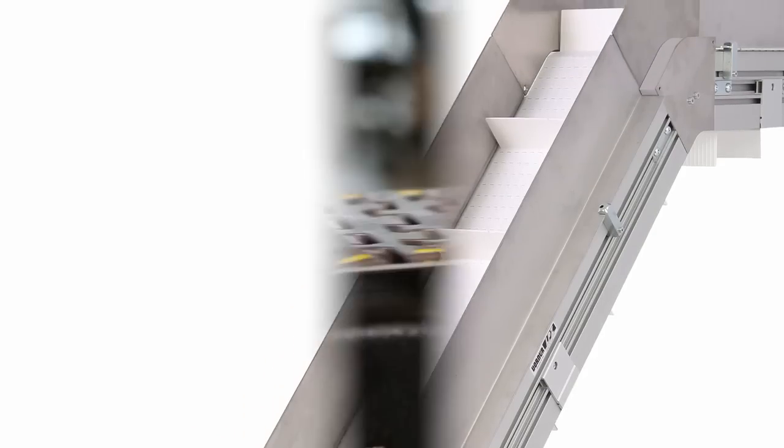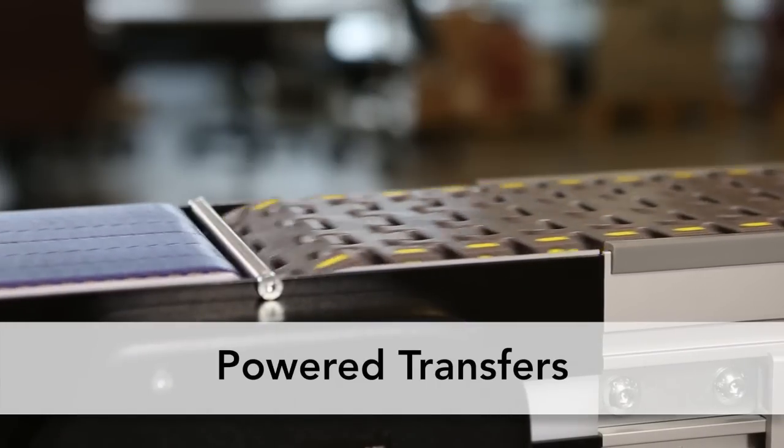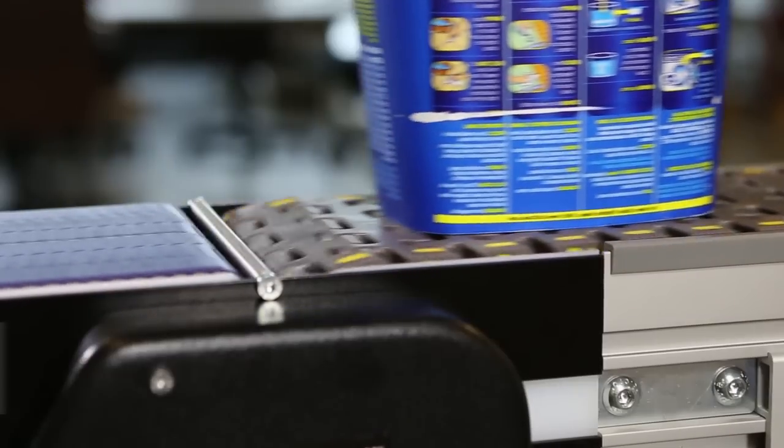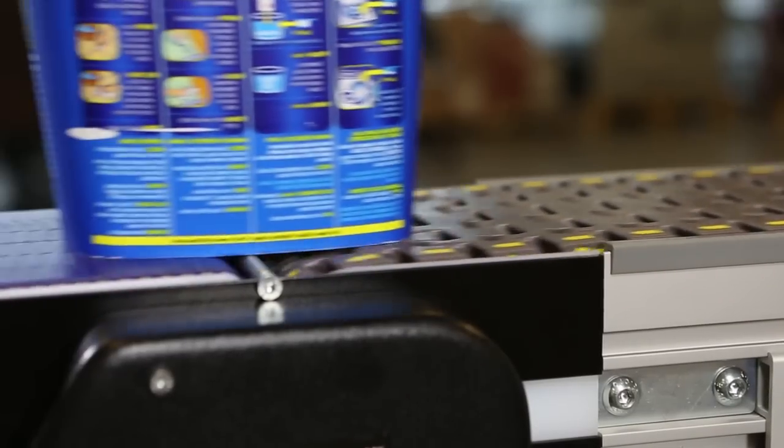The optional Powered Transfer allows for smooth end transfers of products as small as 3 inches in diameter and can be attached to the in-feed or exit of the conveyor.